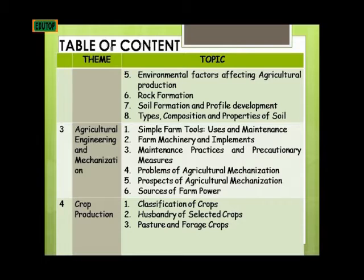Moving to the third theme, Agricultural Engineering and Mechanization. The first topic is simple farm tools, their uses and maintenance. The second is farm machinery and implements. The third is maintenance practices and precautionary measures. The fourth is problems of agricultural mechanization. The fifth is prospects of agricultural mechanization. And the sixth topic is sources of farm power.